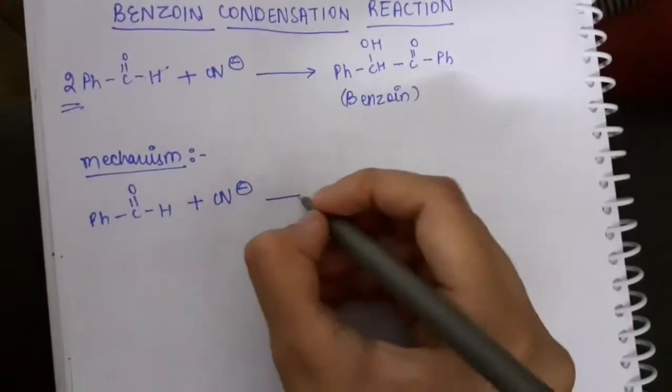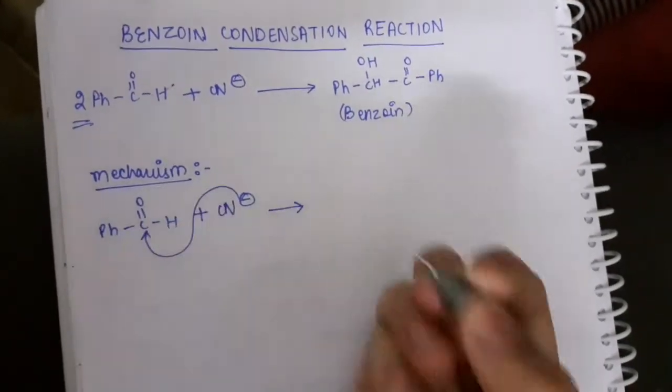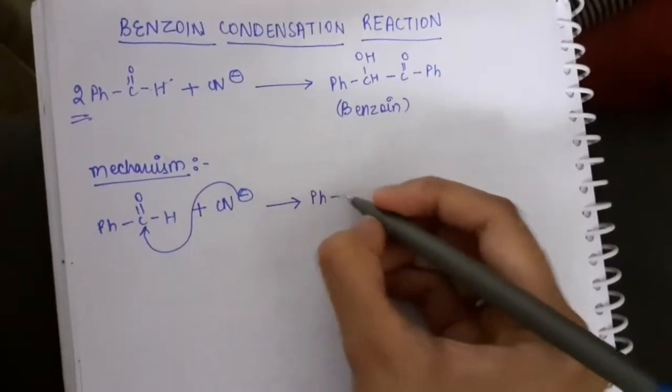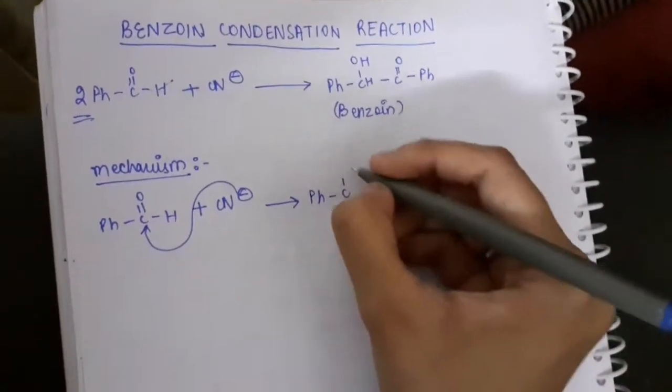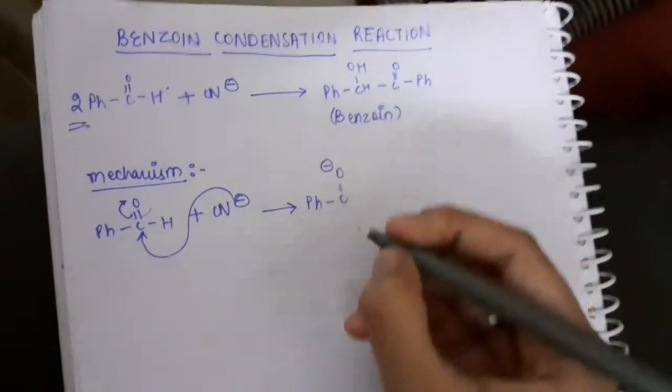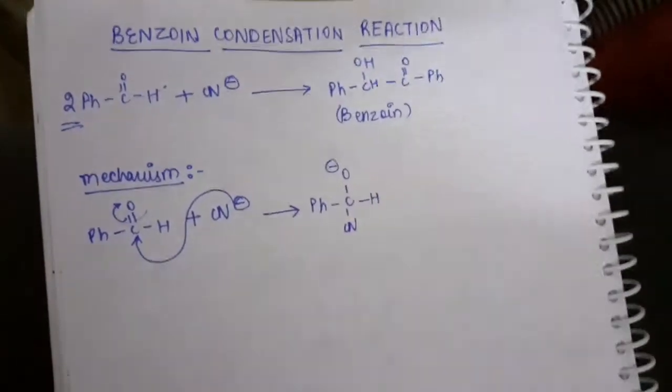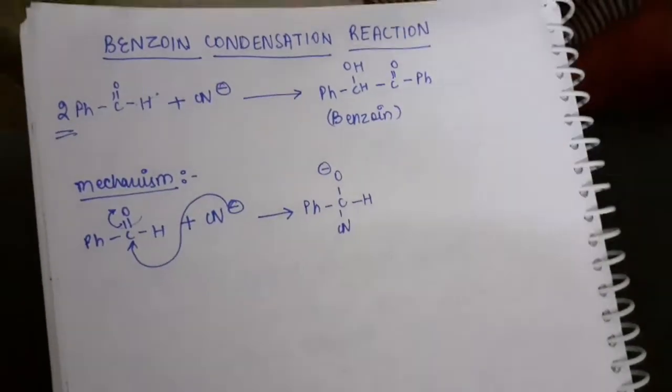After adding the cyanide ion, the cyanide ion reacts with the electropositive center of carbon. This of course changes the electron density, so oxygen would get a negative charge here with H here and cyanide attached to carbon.